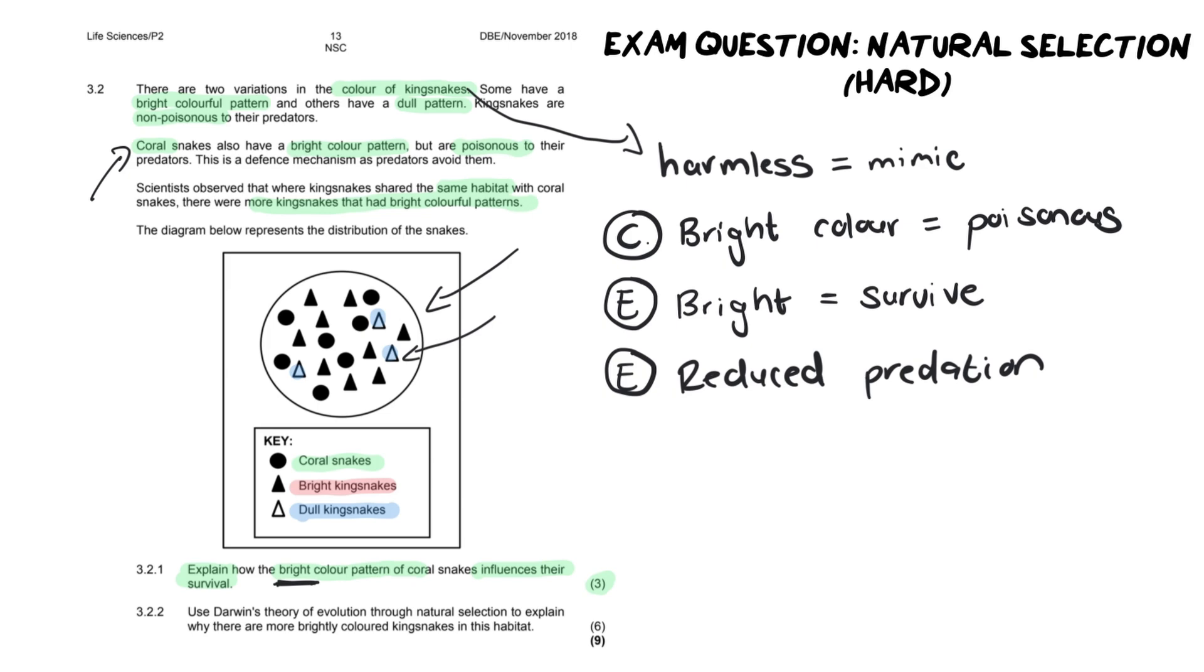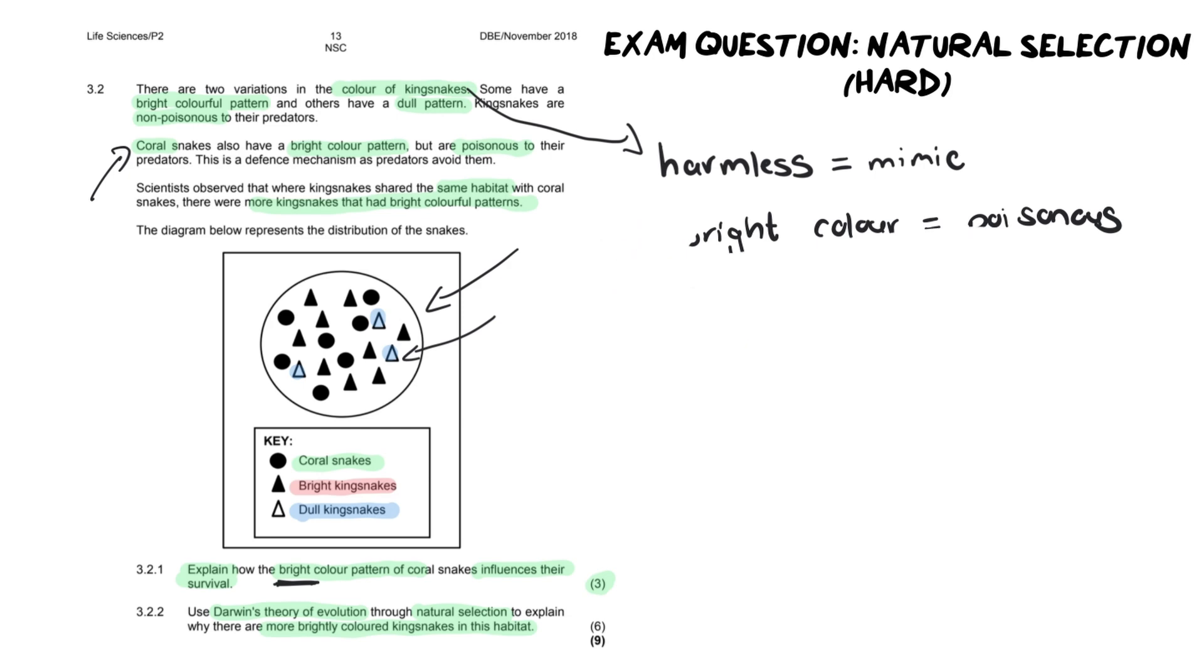Let's move into the longer question. The next question says, use Darwin's theory of evolution through natural selection to explain why there are more brightly colored king snakes in this habitat. So step one, everybody, for this question, you must, must, must use your guideline. Your exam guideline. And that's going to give you the step-by-step answer that you're going to use.